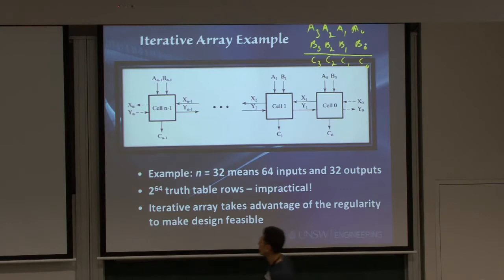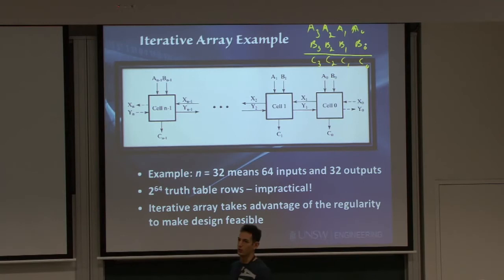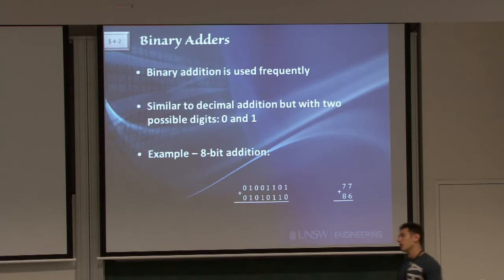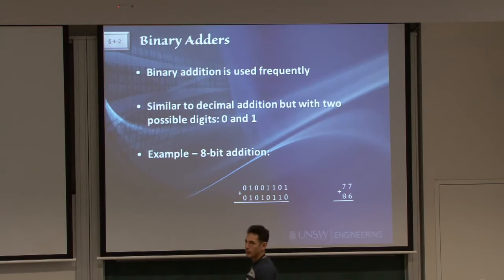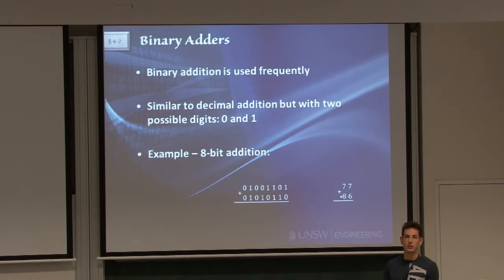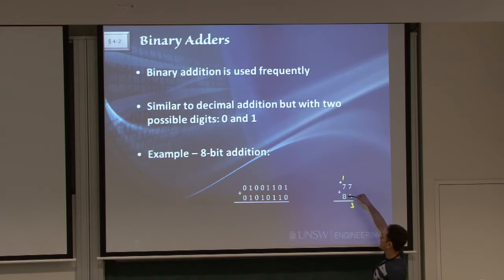Therefore, it's actually better to design bit by bit — one cell per bit — and then connect them together. You might not get the most optimized circuit, but you will save yourself a whole lot of work. We'll start off talking about binary adders, which are very common. When you want to add two binary numbers, it's essentially the same as you would do in decimal. For example, adding two decimal numbers: 7 plus 6 is 13, so you get a 3 and carry a 1, then 1 plus 7 is 8, plus 8 is 16, and you end up with 163.